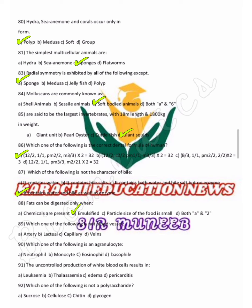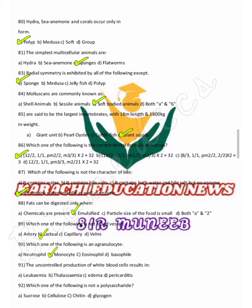The following are blood vessels: arteries, capillaries, and veins. Regarding agranulocytes — the question asks which of the following is not an agranulocyte. The answer is a granulocyte. Uncontrolled production of white blood cells results in leukemia.